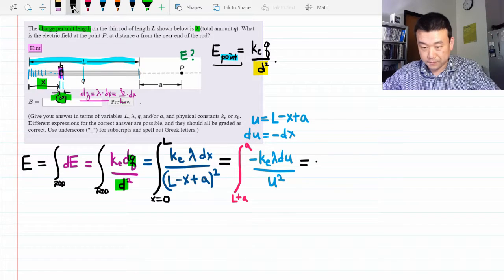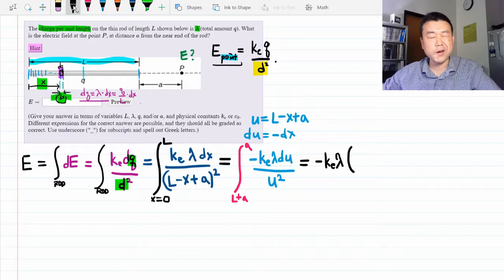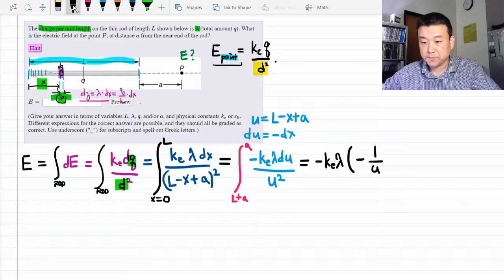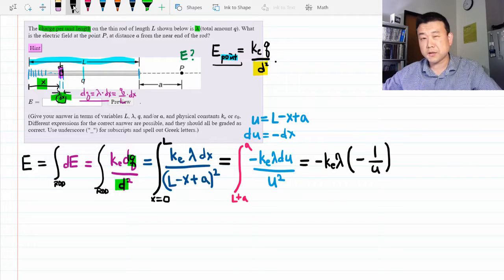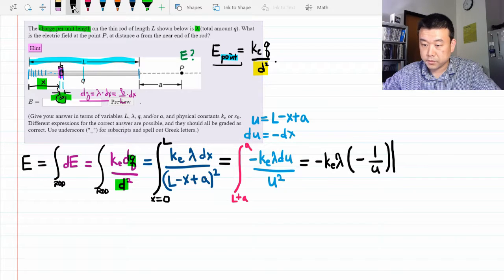So let me go ahead and do it. Factoring out the constants. And the antiderivative of 1 over U squared is minus 1 over U. You can double check it by taking the derivative of this expression. You should get plus 1 over U squared.